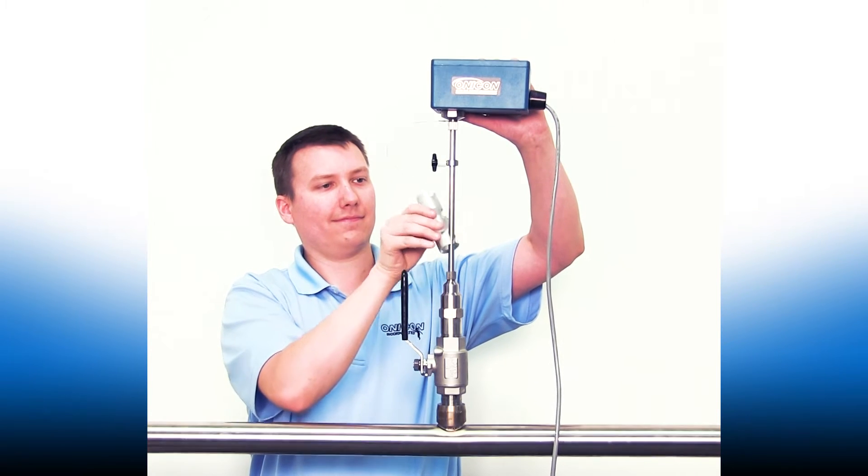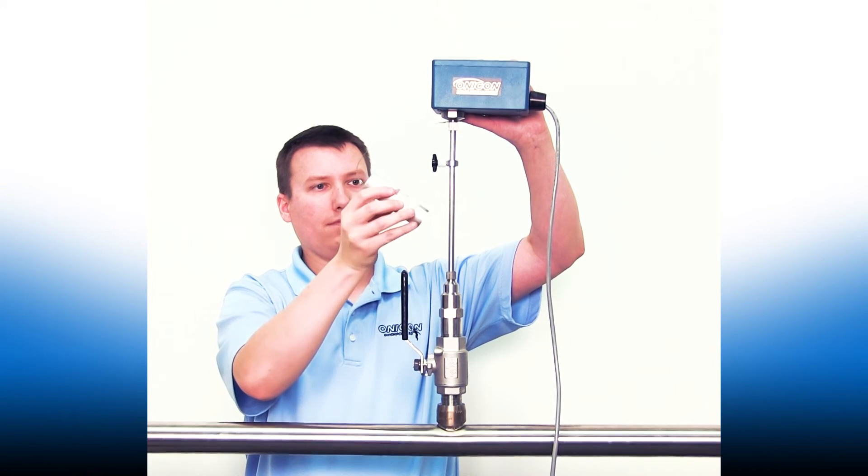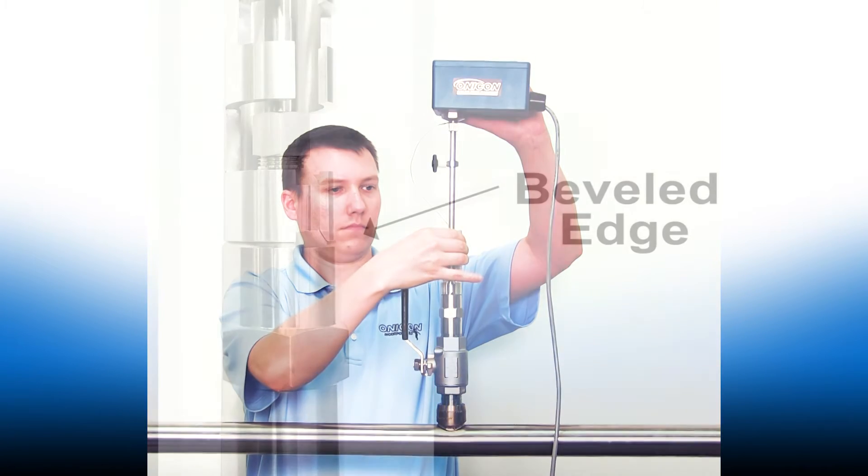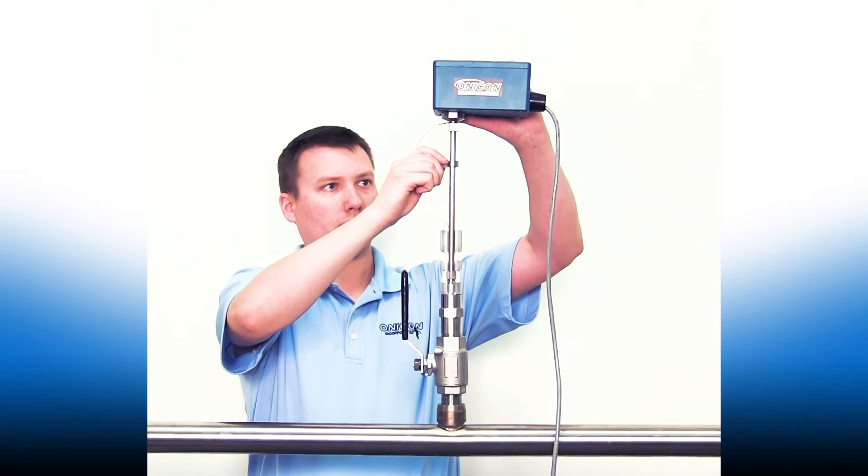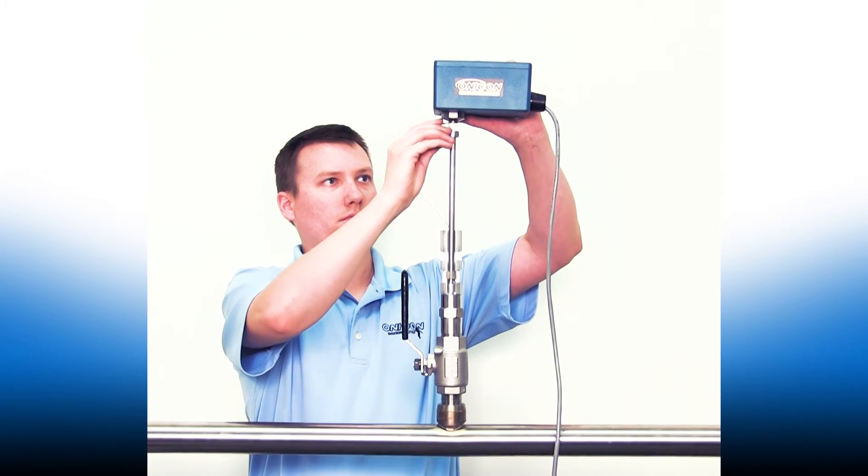Place the insertion depth and alignment tool around the stem, making sure that the beveled edge of the tool is flush with the beveled edge of the hot tap adapter. Loosen the collar and slide it to the top of the stem and lightly tighten it.